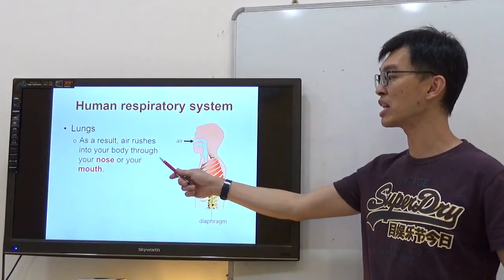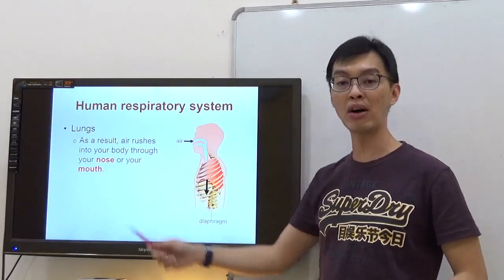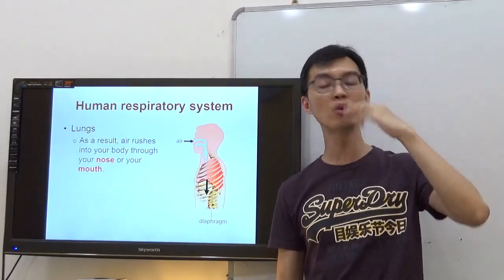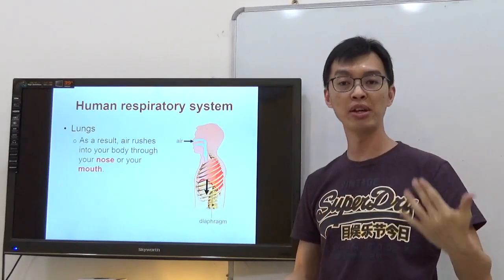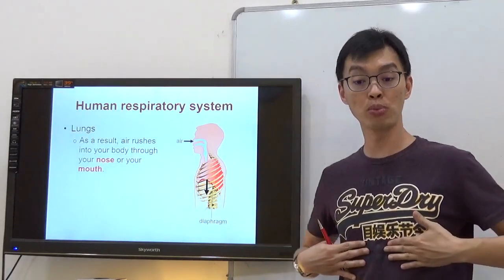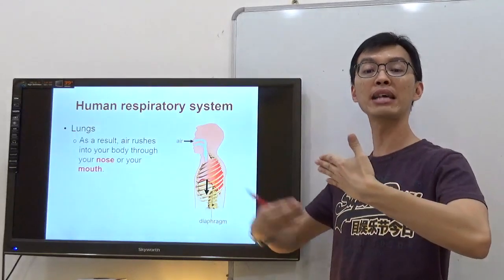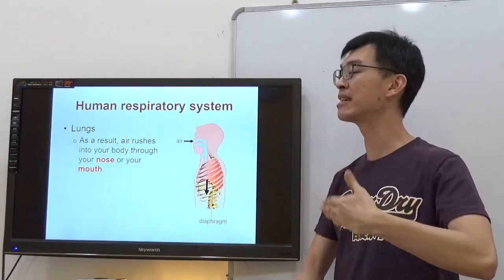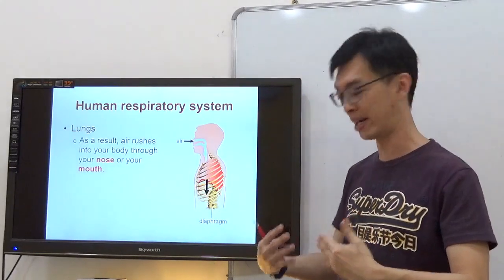As a result, air rushes into your body through your nose or your mouth. You could either breathe through your nose or breathe through your mouth. No matter how you do it, you will cause your ribs to move out and upwards and the diaphragm to move downwards, and the chest becomes a little bigger.